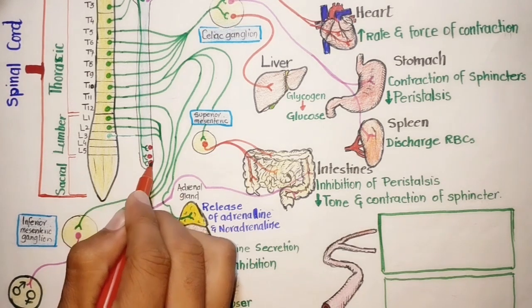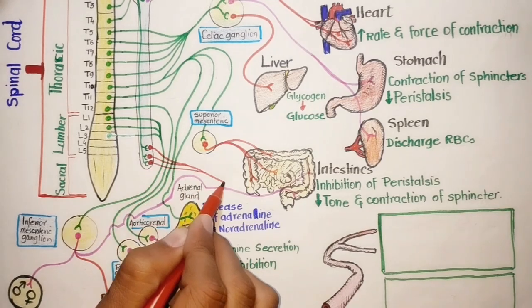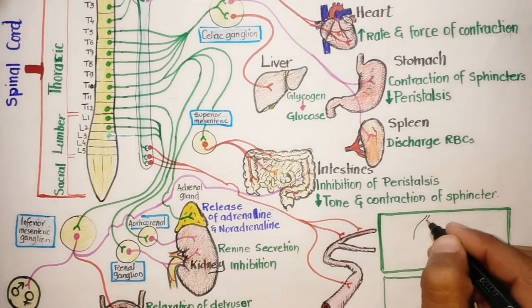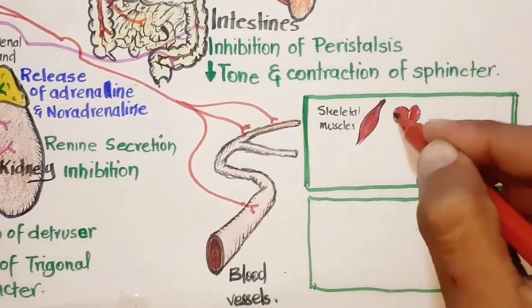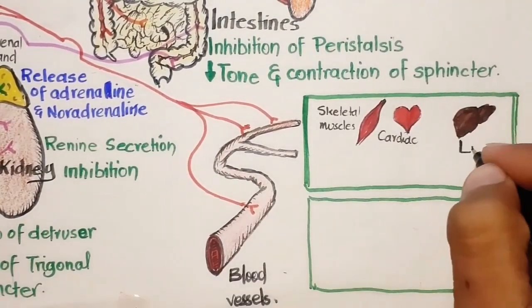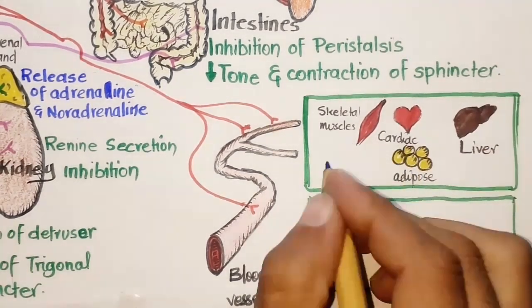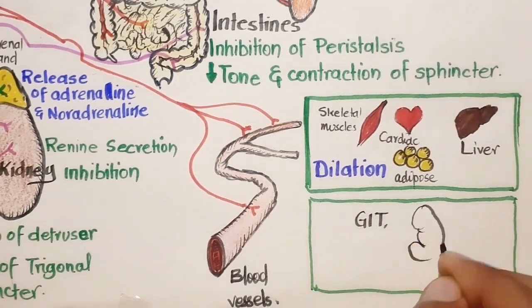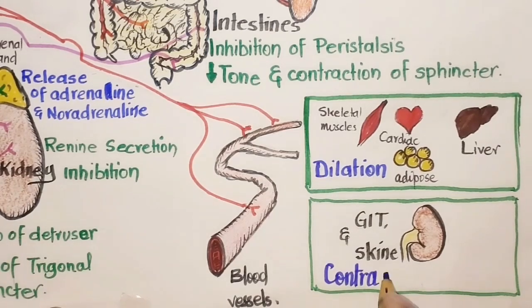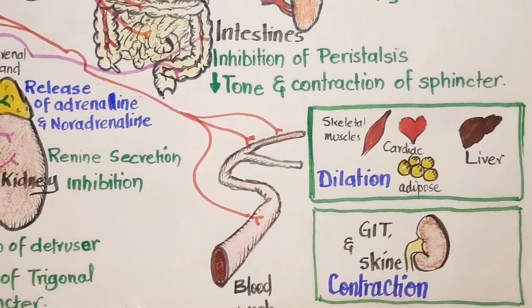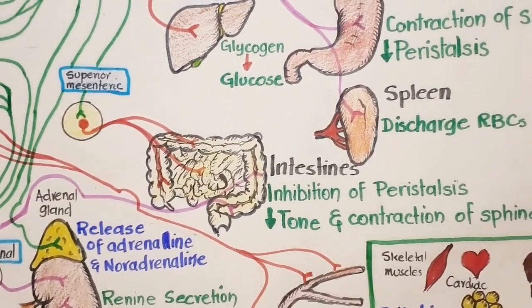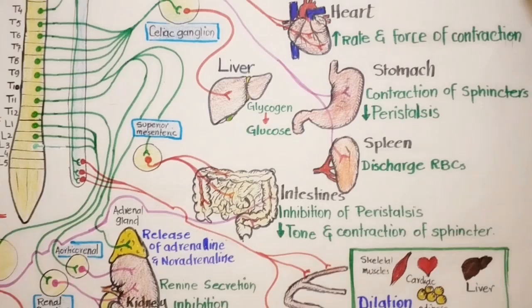Not all blood vessels respond the same way to sympathetic stimulation. The blood vessels supplying skeletal muscles, cardiac muscles, liver, and adipose tissues are dilated. In contrast, other vessels — such as those supplying the gastrointestinal tract, kidneys, and skin — are constricted. Due to constriction of vessels to the kidneys and GI tract, which decreases blood flow through these tissues, the result is a slowing of urine formation and digestive activities.